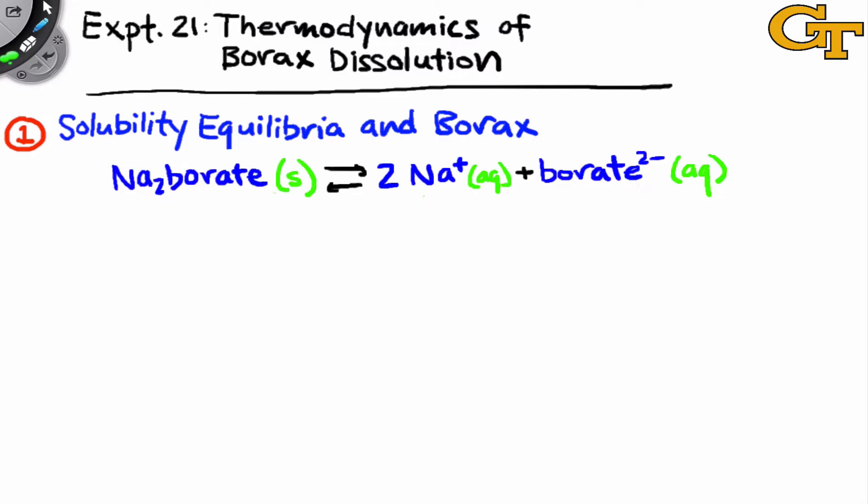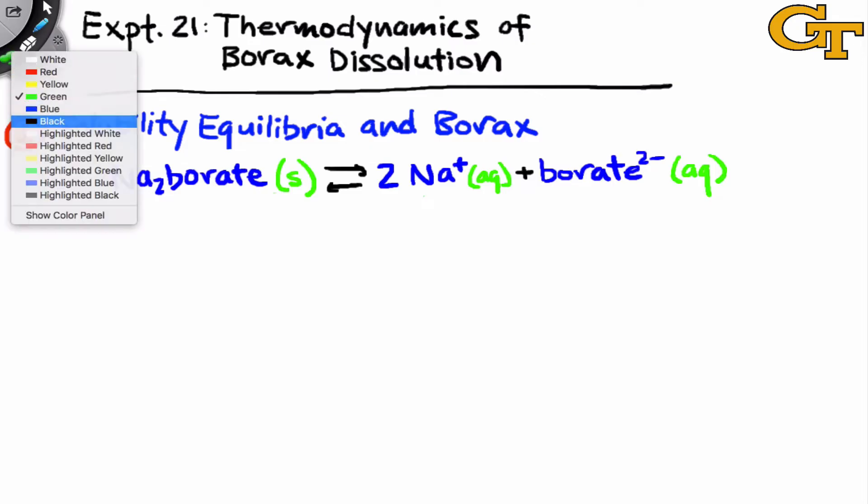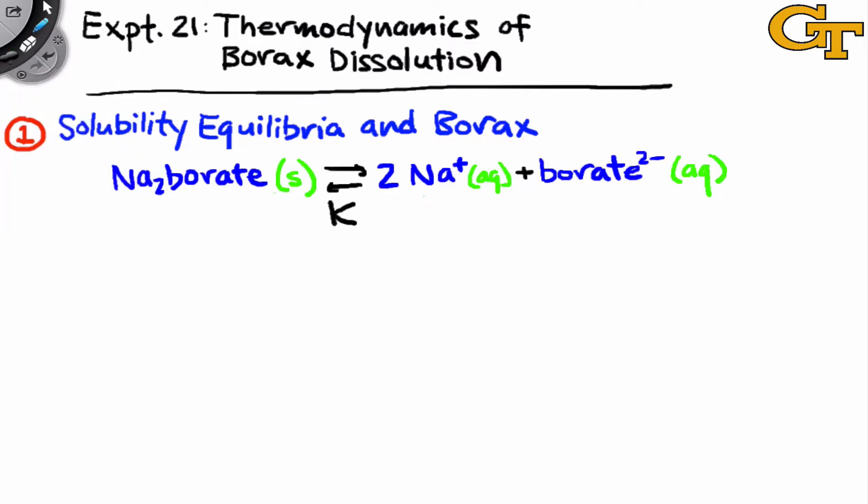The equilibrium constant associated with these forward and reverse processes is known as Ksp, or the solubility product constant. By now you should be familiar with the idea that we do not include the solid reactant in the equilibrium expression for Ksp.